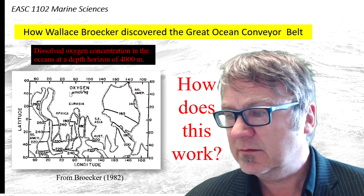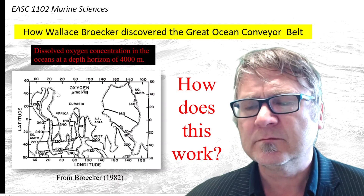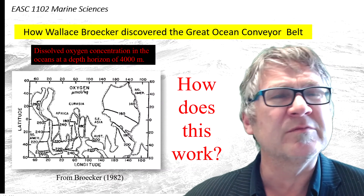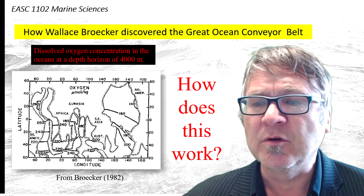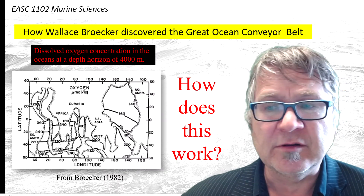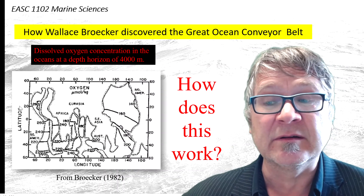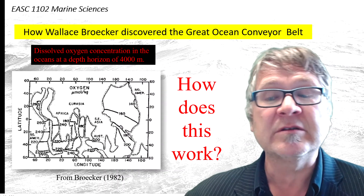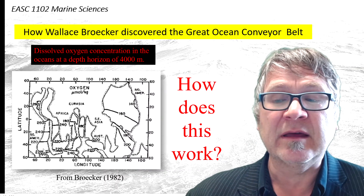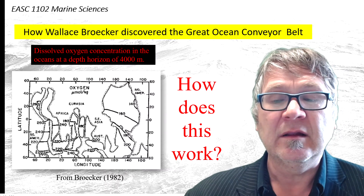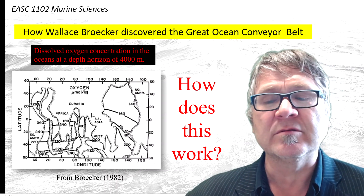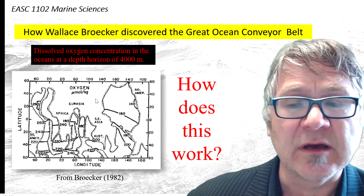Let's have a look at the numbers. Where do you get the highest values? 260 micromoles per kilogram in the North Atlantic at 4,000 meters — relatively high. The numbers here are for comparison. You get lower oxygen concentrations in the South Atlantic, then a slight increase as you go towards Antarctica. Lower in the Indian Ocean, and the lowest in the North Pacific. How does this work?